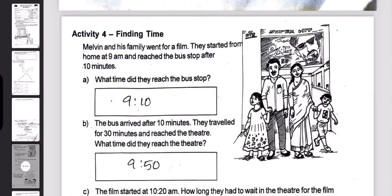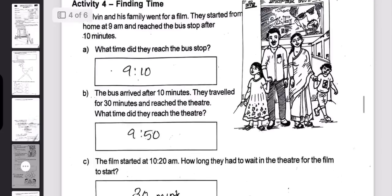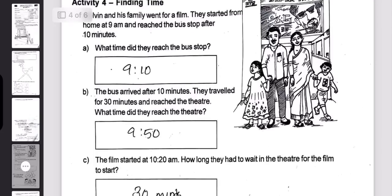Melvin and his family went for a film. They started from home at 9 am and reached the bus stop after 10 minutes. The bus arrived after 10 minutes. They travelled for 30 minutes.